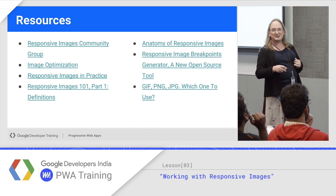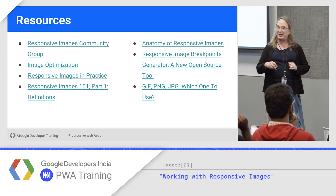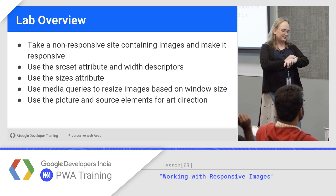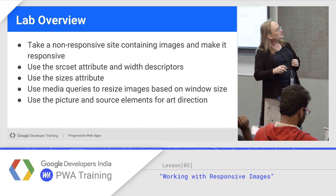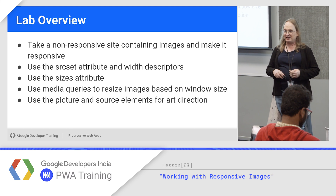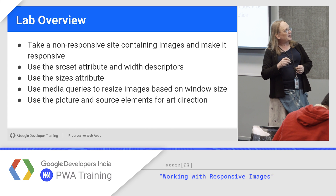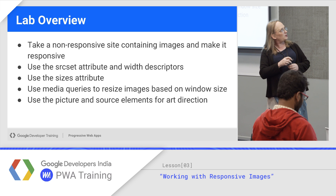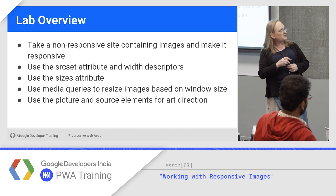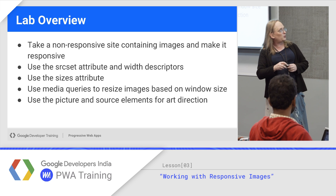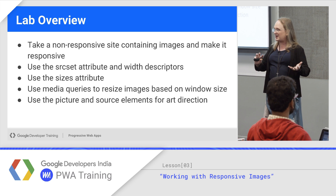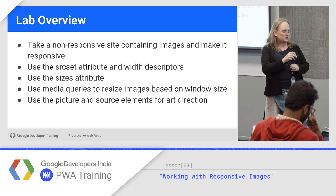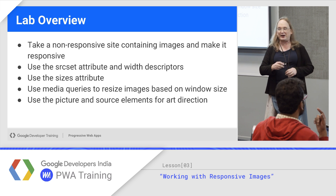Lots of resources — this is in the slide decks available online and also in your textbook. Now it's lab time. We're going to give you a non-responsive blog site and have you make it use responsive images. You'll work with srcset and width, use the sizes attribute, use media queries to change the image based on size — that's art direction — and then use the picture and source elements to do art direction.